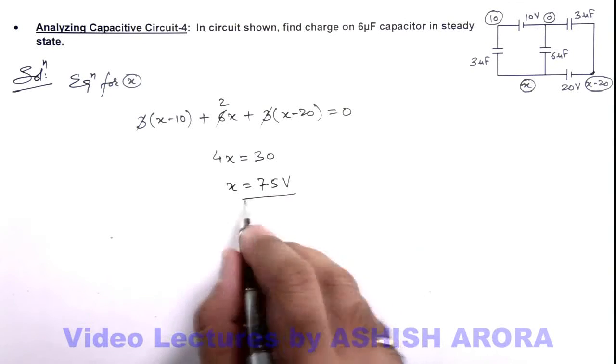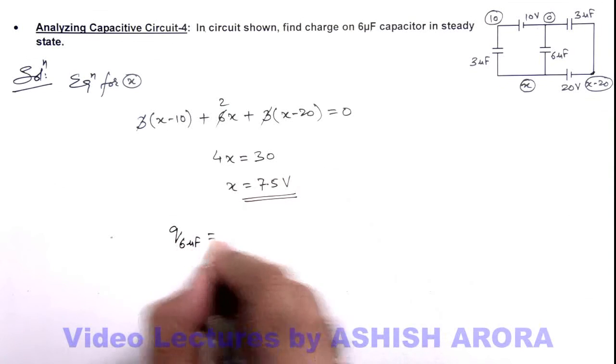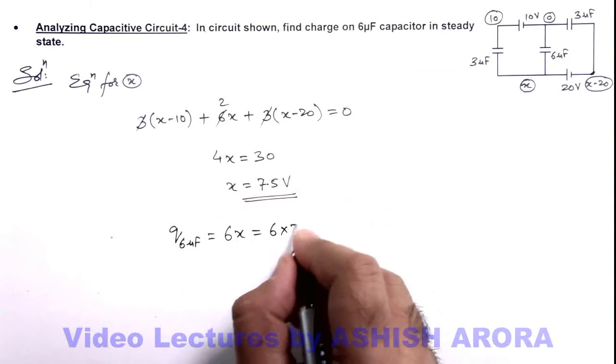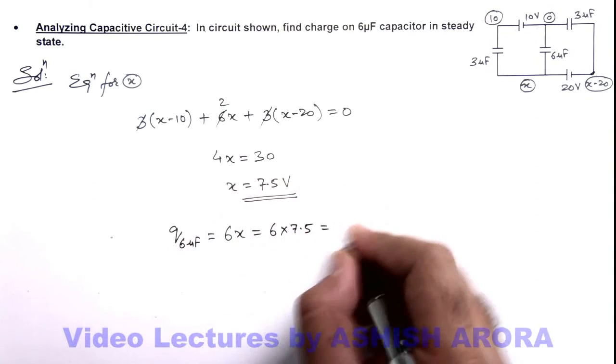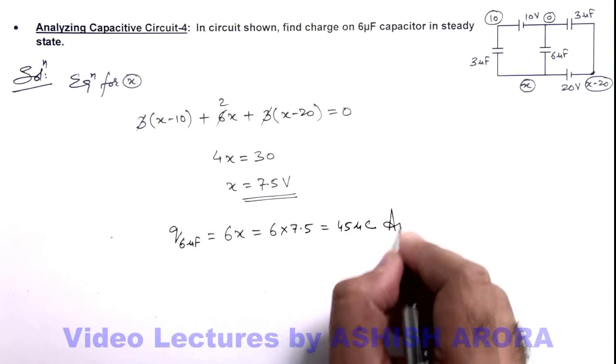So we have got the value of x, we can calculate the charge on 6 micro farad capacitor which is 6 x. So this will be 6 multiplied by 7 point 5, and that is equal to 45 micro coulomb. That is the answer for this problem.